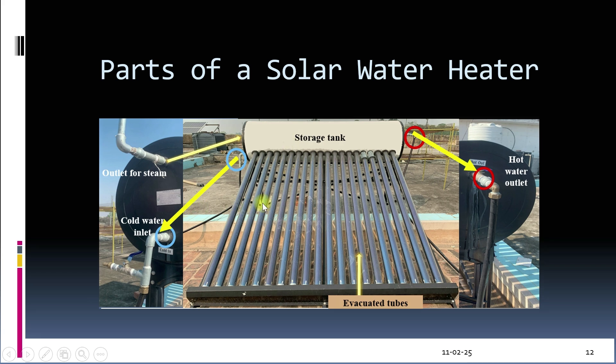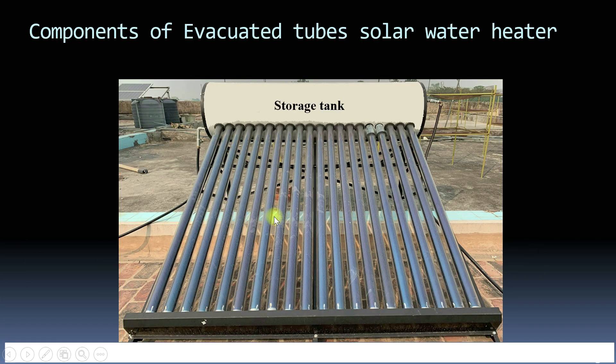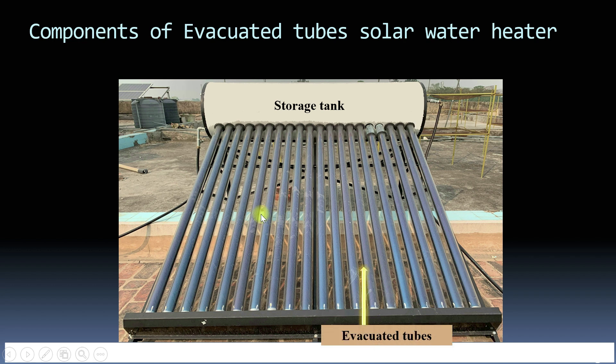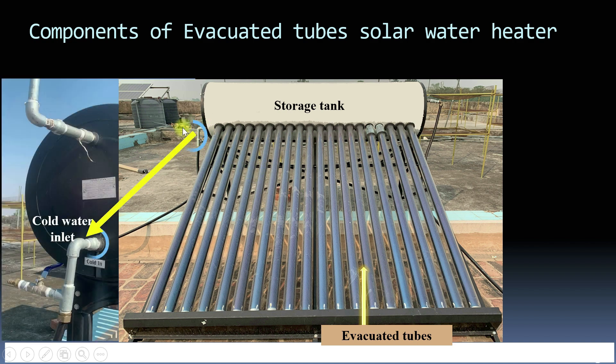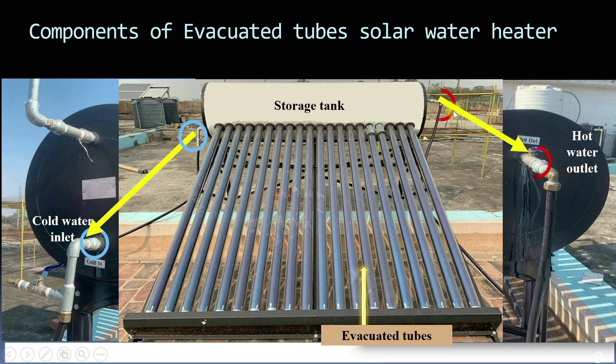Now that we have covered placement and angle, let's take a closer look at components of the solar water heater to understand how it works. This is an evacuated tube solar water heater and it has three main parts: an inlet for cold water, an outlet for hot water. Notice that the hot water outlet is positioned higher than the cold water inlet. An outlet for excess steam.